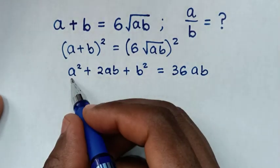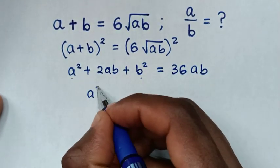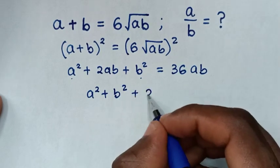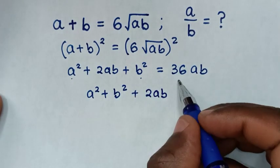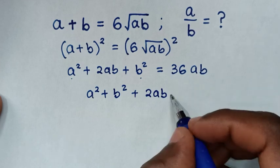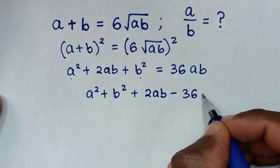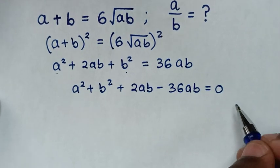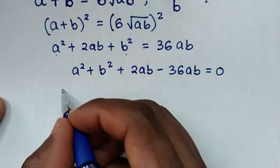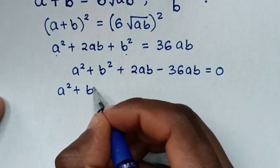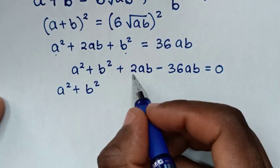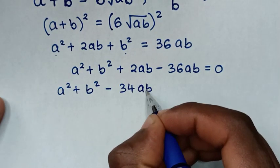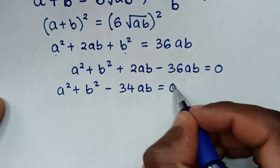Then our equation will be a squared plus b squared, plus 2ab. We'll take 36ab to the left side, so it will be minus 36ab is equal to 0. Then a squared plus b squared, then 2ab minus 36ab is negative 34ab, is equal to 0.